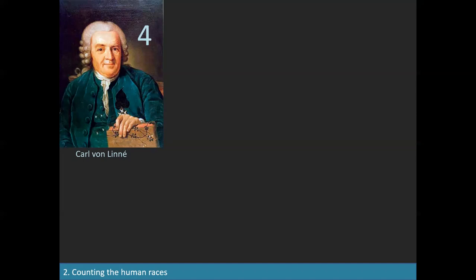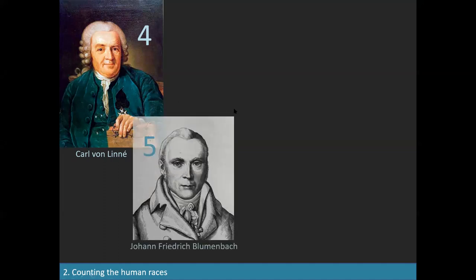Linnaeus proposed four human races basically corresponding to the four main continents, excluding Australia. Australia entered the picture with Blumenbach, a German anatomist and medical doctor who studied the collection of skulls at the University of Göttingen. He based his classification on an aesthetic criterion — the beauty of the skulls — and thought the most beautiful skulls all came from the same continent.